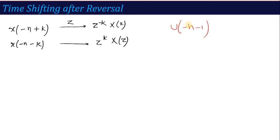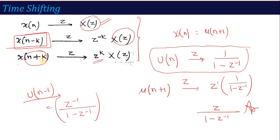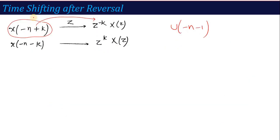If you remember, when two properties are applied together, which one do we operate first? We operate reversal first. Now in reversal, after applying reversal and then applying shifting, remember this: once you apply reversal, if you are then doing shifting, in the Z-transform the sign goes with opposite sign in z to the power. So for x(-n+k), the result has z^(-k) * X(z), and for shift by -k, it has z^(+k) * X(z).